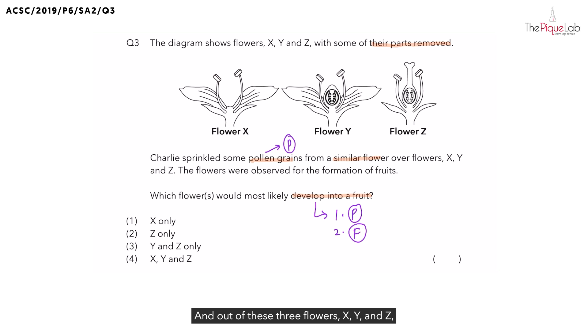And out of these 3 flowers, which of the flowers still has the stigma present? We have flower Z. And where exactly is the stigma? The stigma is attached to the style and is attached to the ovary. So, the stigma is present for pollination to occur.